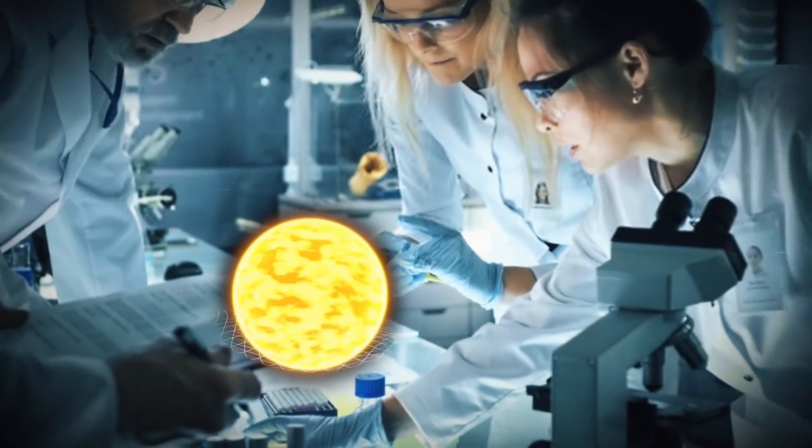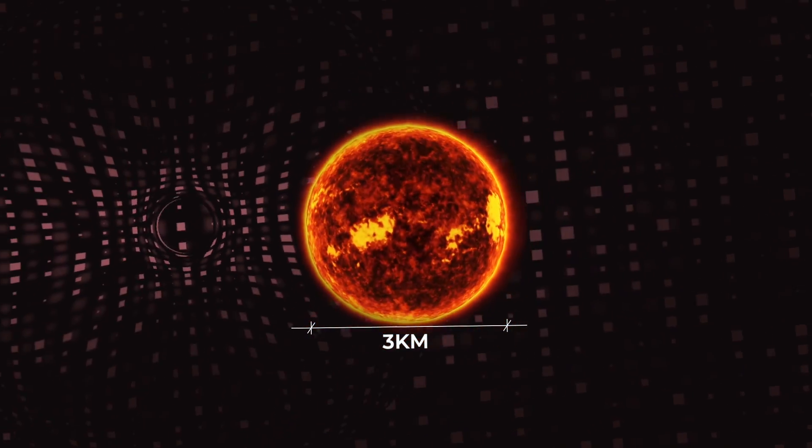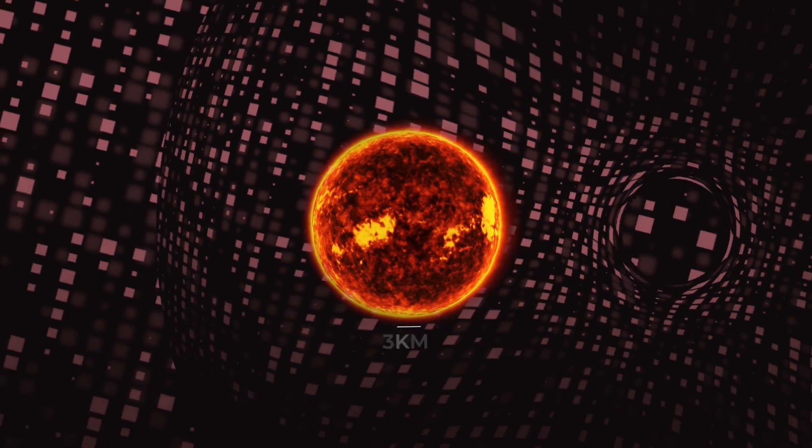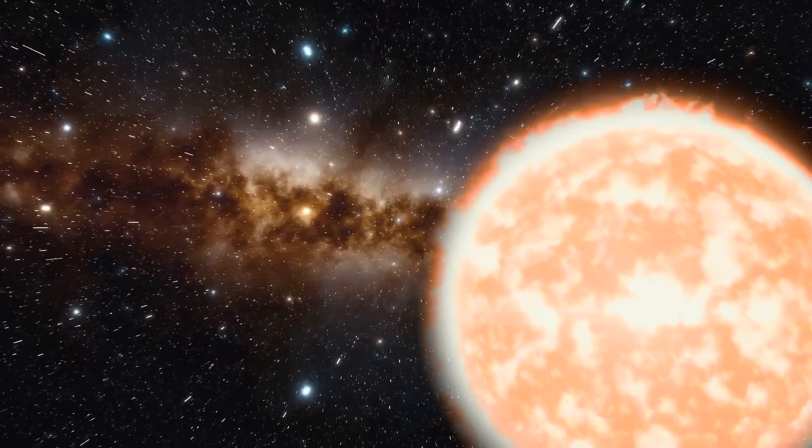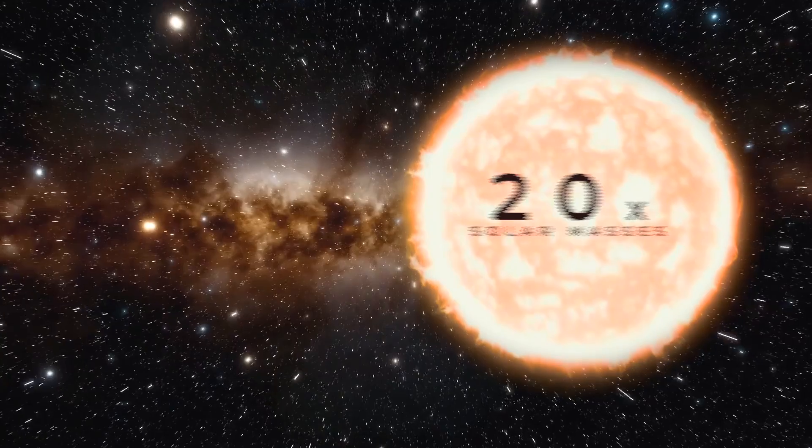If scientists wanted to create a black hole with all that mass, they would have to compress it down to its Schwarzschild radius, which would only be 3 kilometers across. Astronomers believe that black holes are formed when stars that are larger than 20 times the mass of our Sun reach the end of their life.